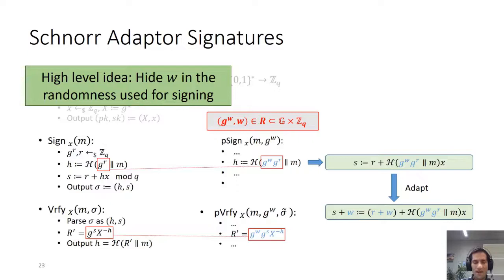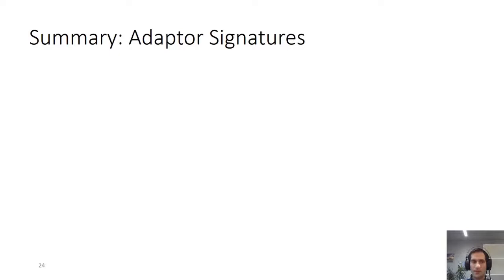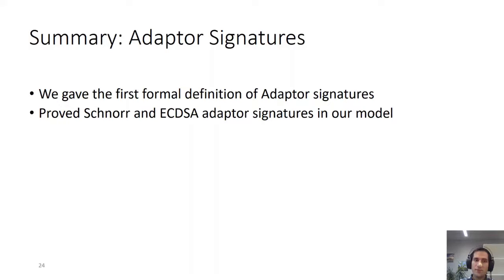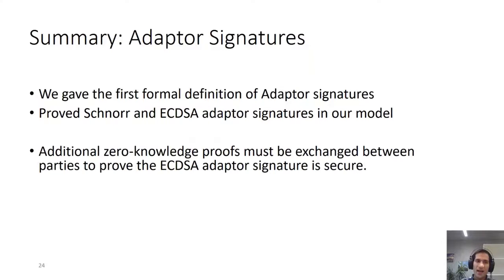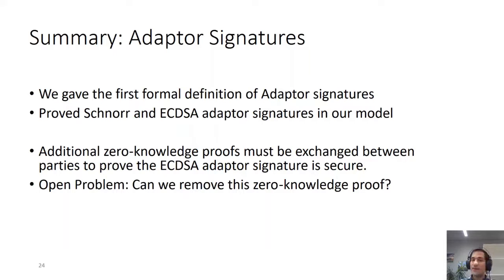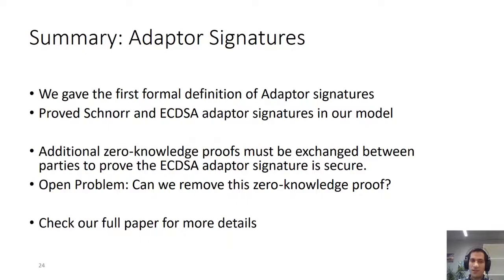To summarize our contribution with respect to adapter signatures: we gave the first formal definition of adapter signatures and proved Schnorr and ECDSA adapter signatures secure in our model. I want to point out that additional zero-knowledge proofs were required to make the ECDSA variant secure, so an interesting open problem is whether we can remove these ZK proofs and still prove ECDSA adapter signatures secure. For more details please check our full paper. I'll now hand it over to Andreas Erwig for the generalized channel definition and construction.